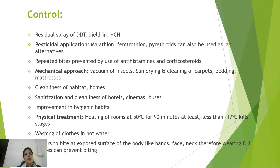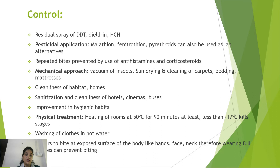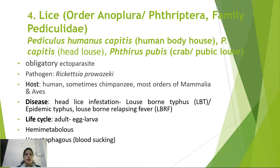Bed bug control involves residual spray of DDT or dieldrin; pesticidal application with malathion and phenothioxin. Repeated bites can be managed with antihistamines and corticosteroids. Cleanliness of habitat is important; mechanical approaches include vacuum cleaning, sun drying, and cleaning carpets, bedding, and mattresses. Improved hygiene and sanitization of crowded areas like hotels, cinemas, and buses are recommended. Washing clothes in hot water and physical treatment at 50°C for 90 minutes or −17°C kills all life stages.